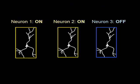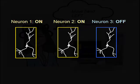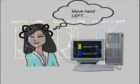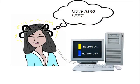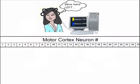Here we identify if neurons are on or off, shown in yellow or blue. Now ask a friend to think: move hand to the left. Then let's record 25 of her motor cortex neurons.